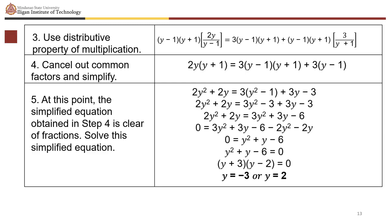Expanding: 2y squared plus 2y equals 3 times (y squared minus 1) plus 3y minus 3. Distributing 3 gives 3y squared minus 3 plus 3y minus 3, so 2y squared plus 2y equals 3y squared plus 3y minus 6. Rearranging: 0 equals y squared plus y minus 6.